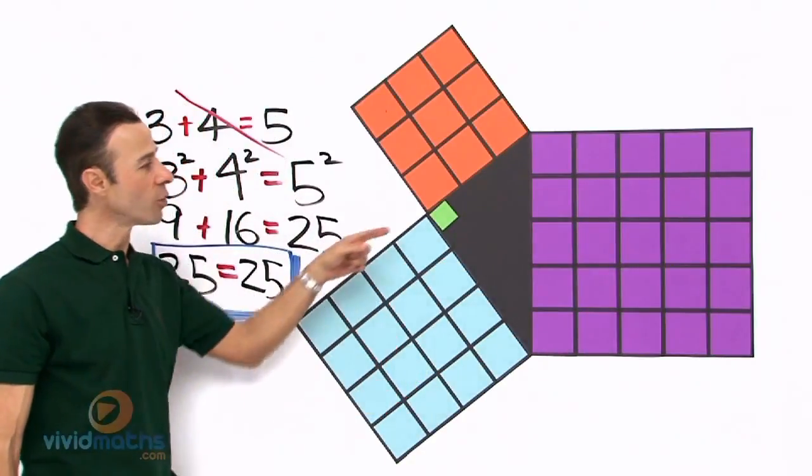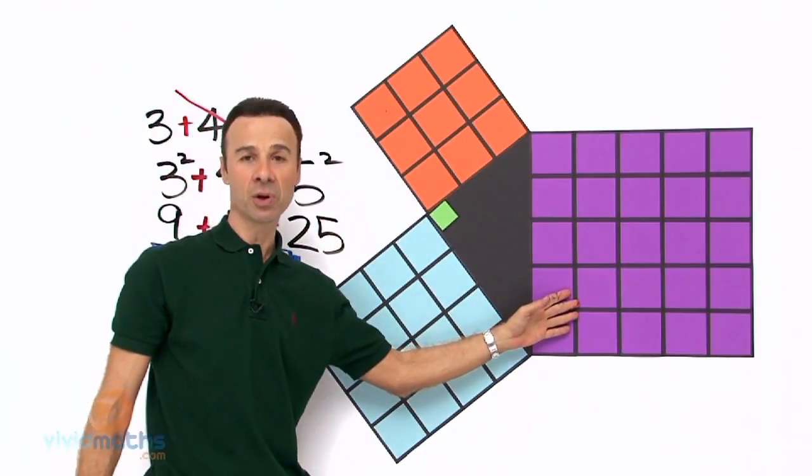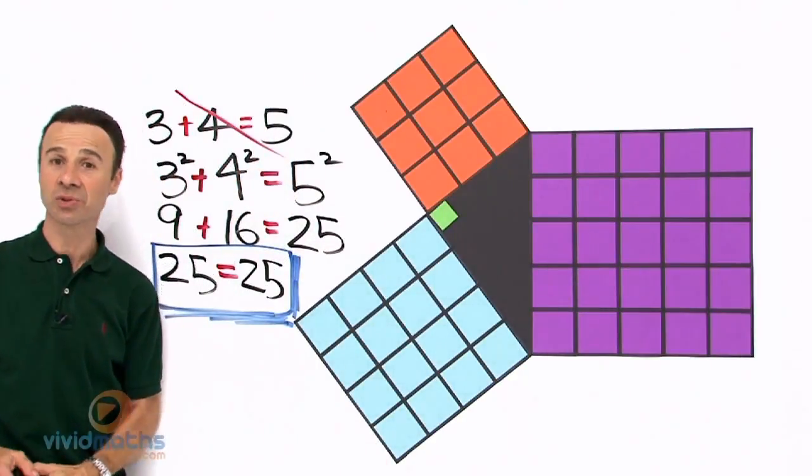So clearly for a right angle triangle, these two numbers when they are squared, they equal the hypotenuse squared. So clearly Pythagoras' proof actually is true.